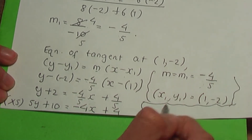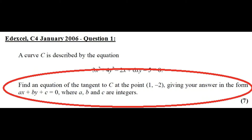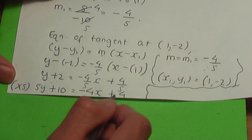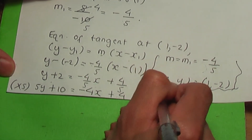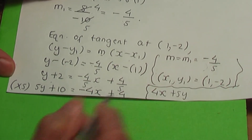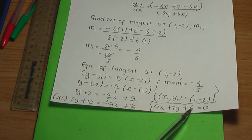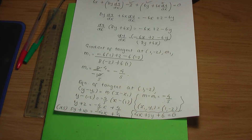Rearranging to the form ax + by + c = 0, we take −4x and 4 to the left: 4x + 5y + 10 − 4 = 0, giving 4x + 5y + 6 = 0. That is the final answer to question number 1. I hope you found this video helpful — do plenty of practice on related problems and I hope to see you again. Thank you.